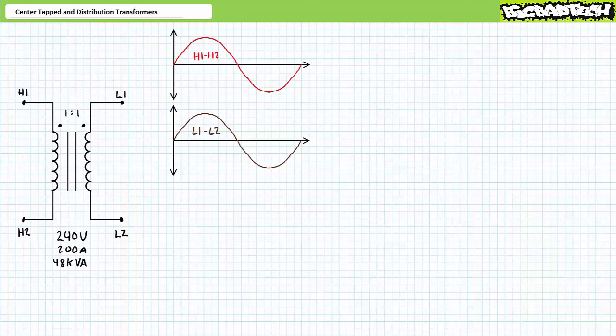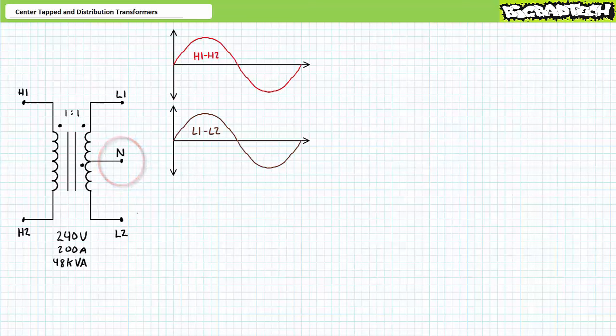Given a one-to-one turns ratio, secondary winding L1 experiences 240 volts RMS. Any load between terminals L1 and L2 would experience 240 volts. If we were to add a tap on the secondary winding called N exactly in the center, such that an equal number of turns appear between both halves of the secondary, we could think of this as two secondary windings with a phase dot at L1, N to N.